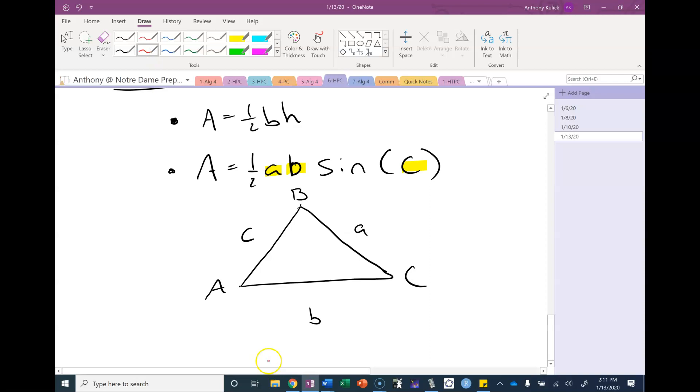Let's say we're going to start with our good old one half base times height. I'm going to start by drawing in the height where I'm going to treat B as the base. To do that, I'm going to draw my height in. There. Remember, the height always has to be perpendicular to the base.